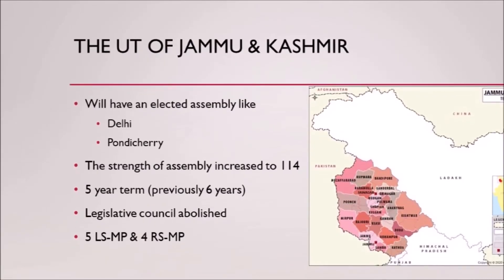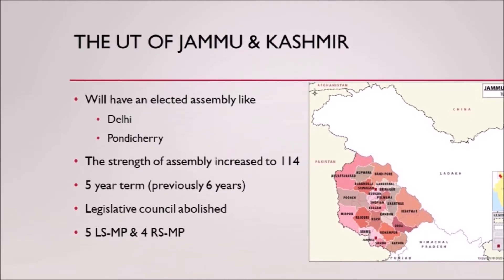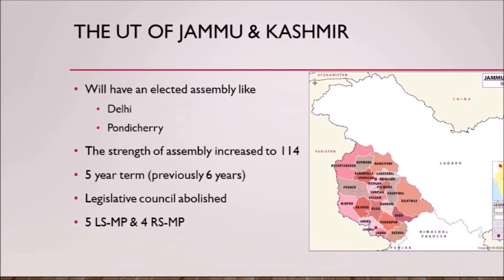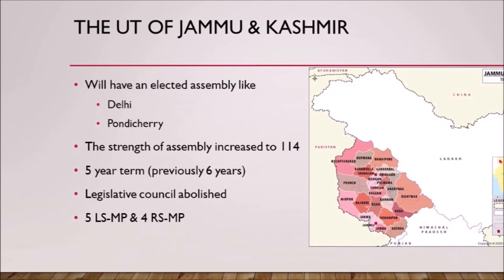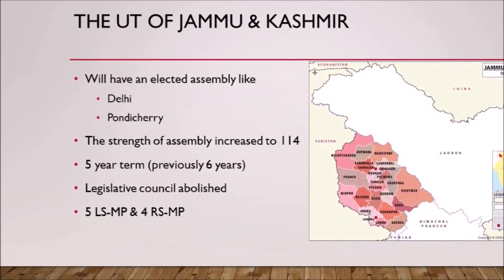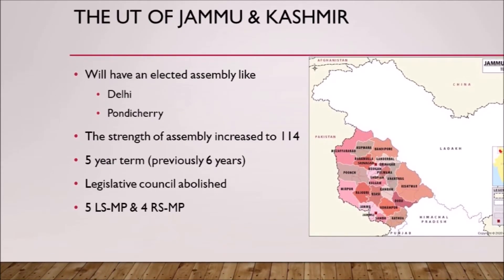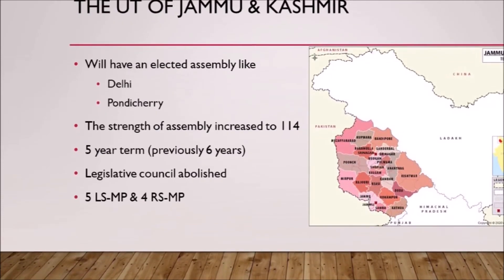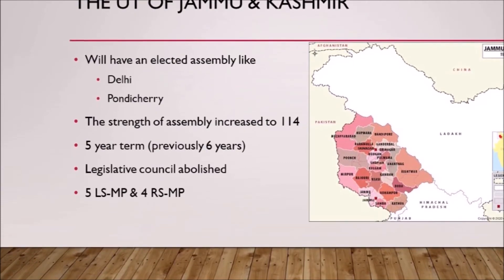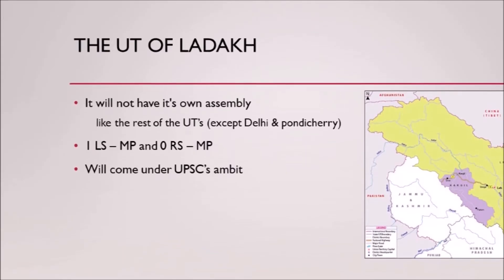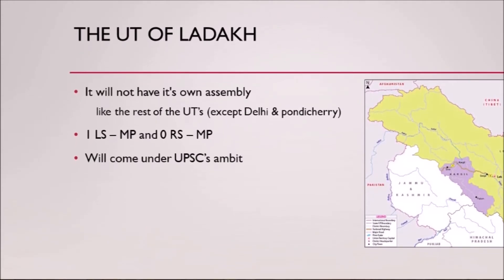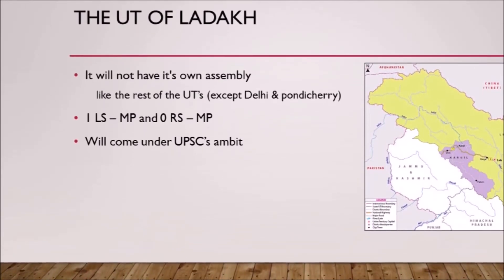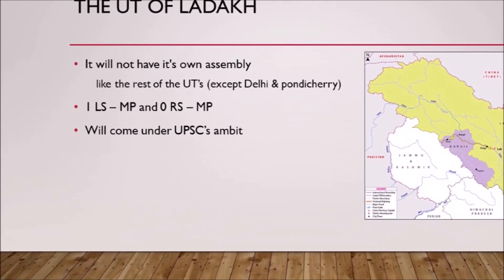The UT of Jammu and Kashmir will have an elected assembly like that of Delhi and Puducherry. The strength of this assembly will be increased to 114, and the assembly will have a term of five years instead of the previous six years. The Legislative Council of Jammu and Kashmir stands abolished, reducing the number of states having Legislative Councils to six. Jammu and Kashmir will have five Lok Sabha MPs and four Rajya Sabha MPs. The UT of Ladakh will not have its own Legislative Assembly; it will have one Lok Sabha MP and zero Rajya Sabha MPs, and will come under UPSC's ambit.